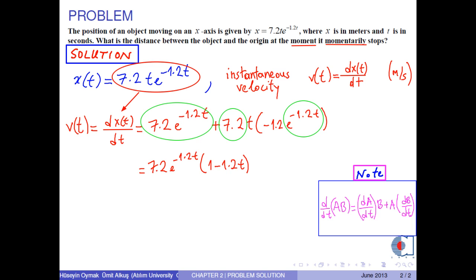Now, we equate this velocity to 0 for the object to momentarily stop. Here, the exponential part is 0 at infinite times and the object continues to stop for all times. However, we are asked to find the time for the momentarily or instantaneously stop. Therefore, 1 minus 1.2 t gives 0.